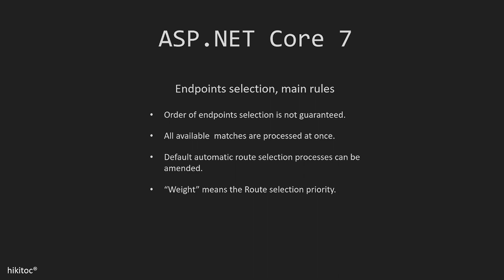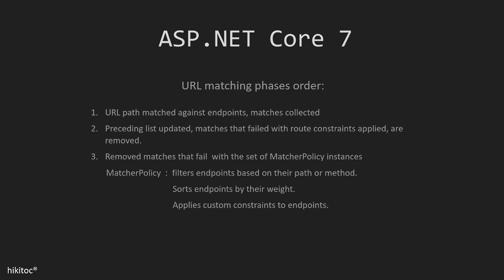Weight refers to the priority of route selection. It's a way to explicitly set the order in which endpoints are executed or evaluated. The process of matching URLs happens in the following order: the received URL path is compared to the available endpoints and their route templates, and all possible matches are collected.